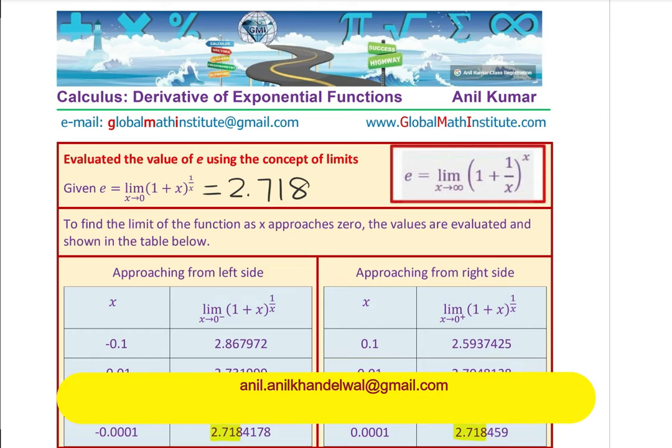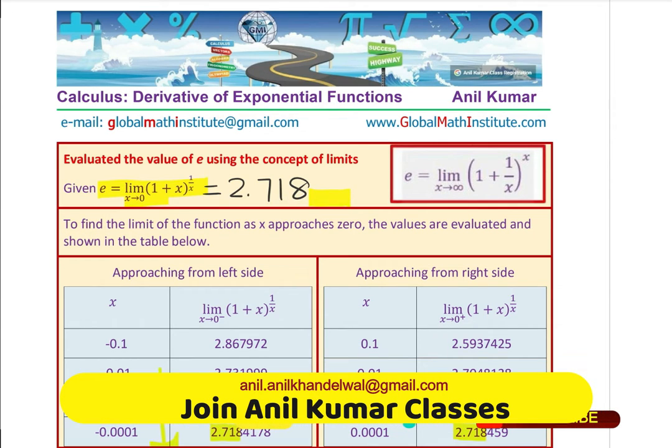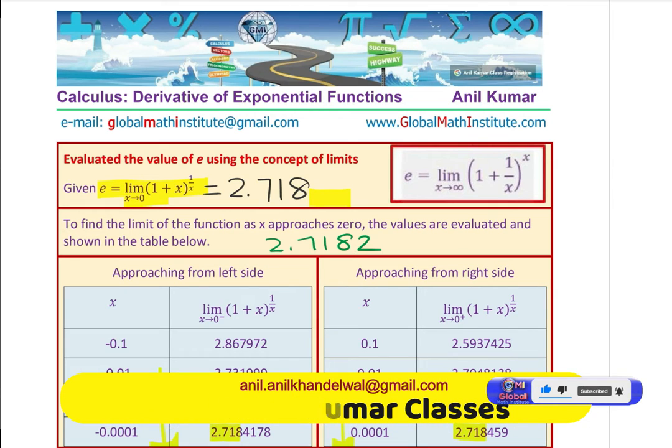We evaluate the value of e using this particular formula, which is limit x approaches 0 for 1 plus x to the power of 1 over x. And in case you want more accuracy, you can continue with this table further. You will find that the value to the next decimal place will be 2.7182. And likewise, you can continue and get more and more accurate values of this irrational number.